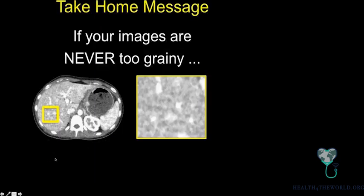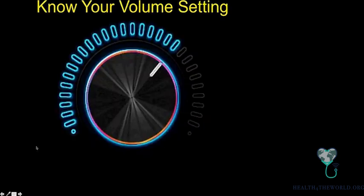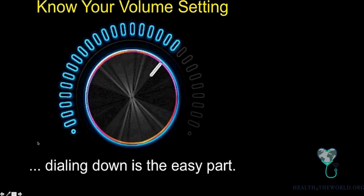The bottom line is: if you are dealing with CT noise and quality and you have never seen bad-looking CTs — where you can't tell if this is cancer, cirrhosis, or noise — then you haven't dropped your dose enough. You have to see failure occasionally to know you're at least within the range of the lowest possible dose. You need to know your baseline before you can dial it down, because the dialing down is the easy part. Getting your partners on board is the hard part.